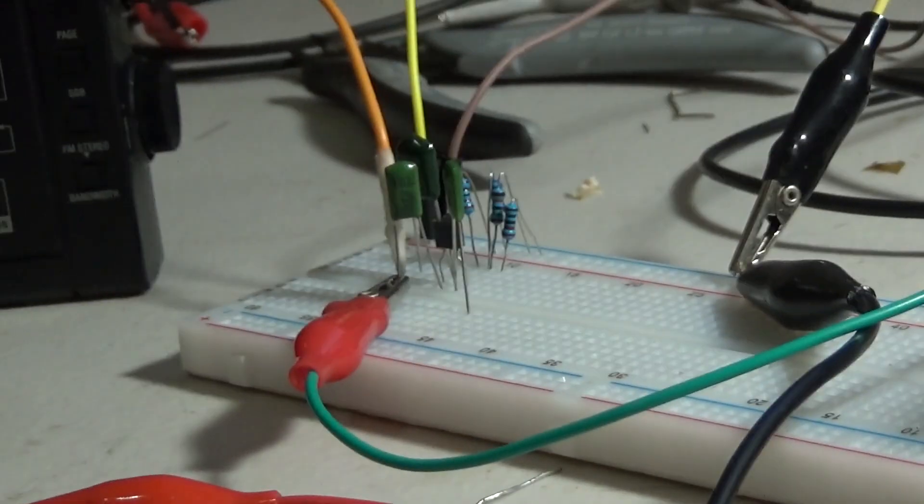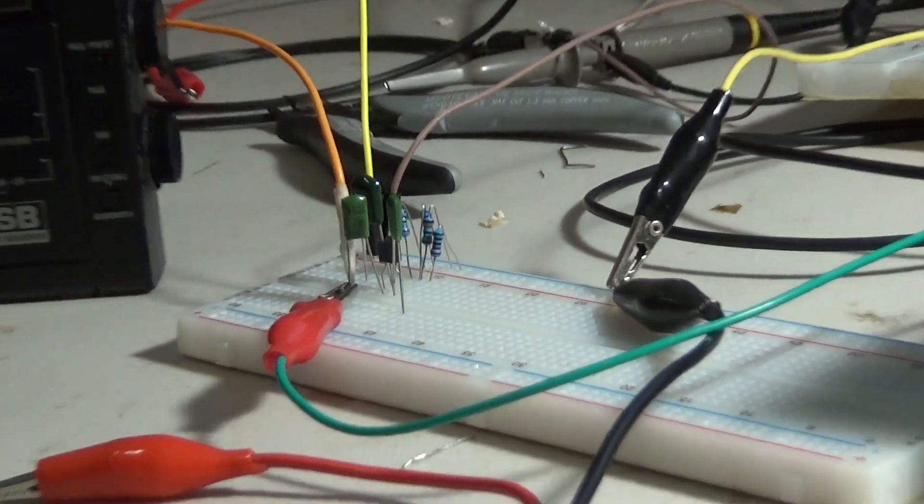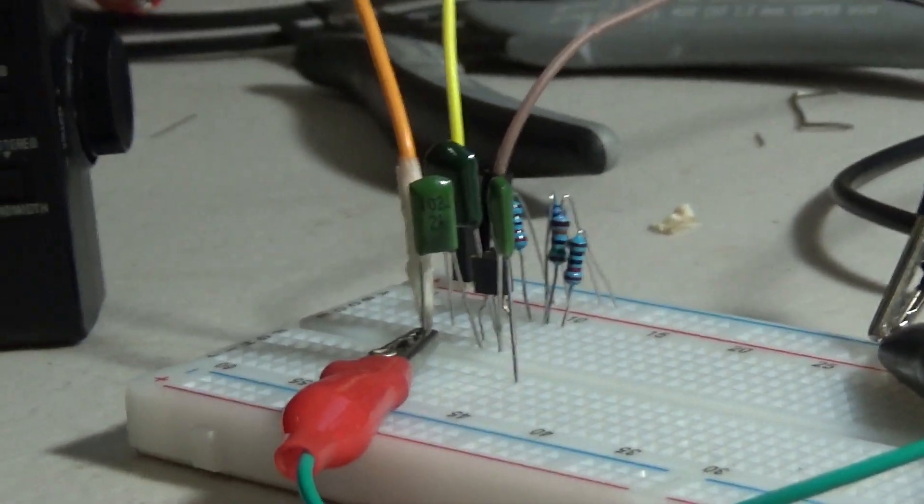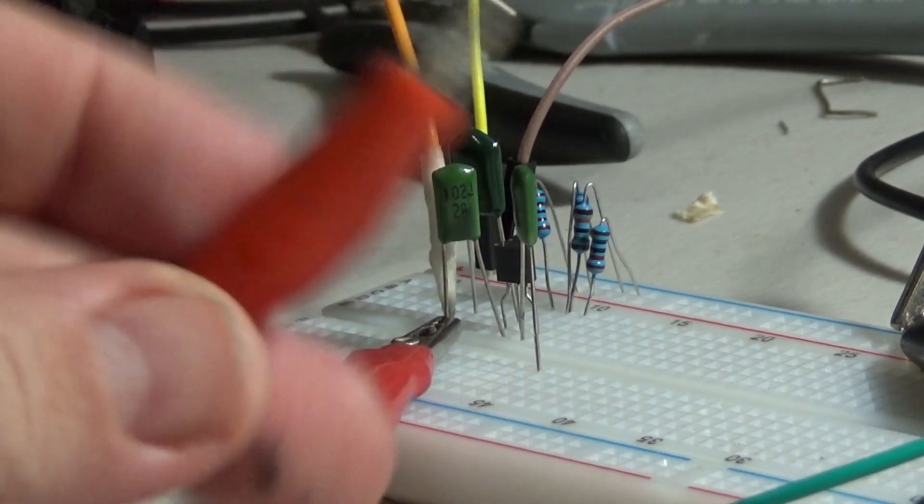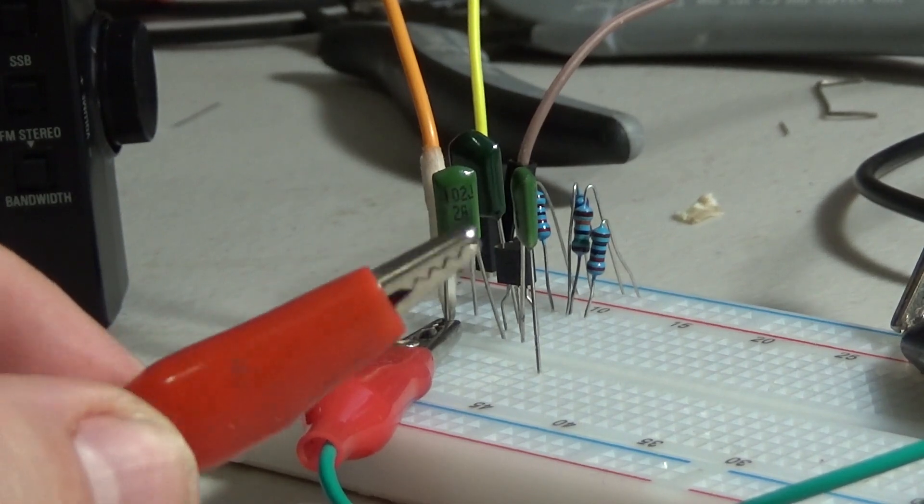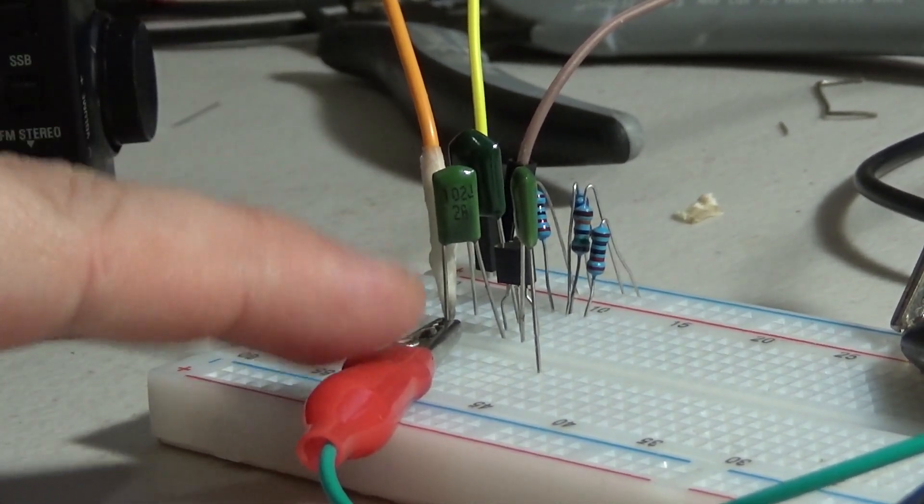And over here, if we just zoom in, we've got our single transistor oscillator. So, this is the output from our local oscillator, our 1.3 MHz. This is connected to an antenna.